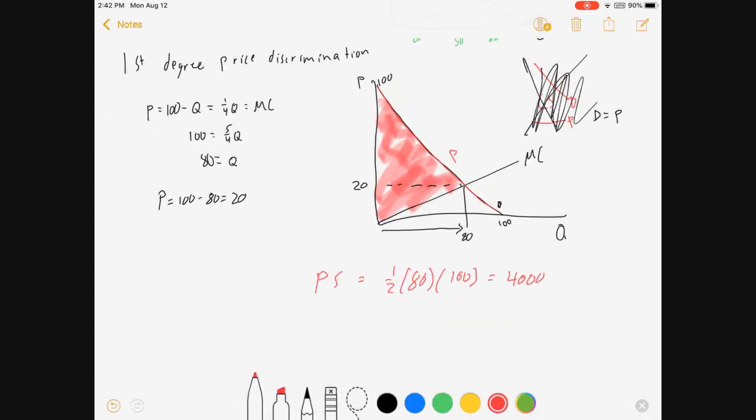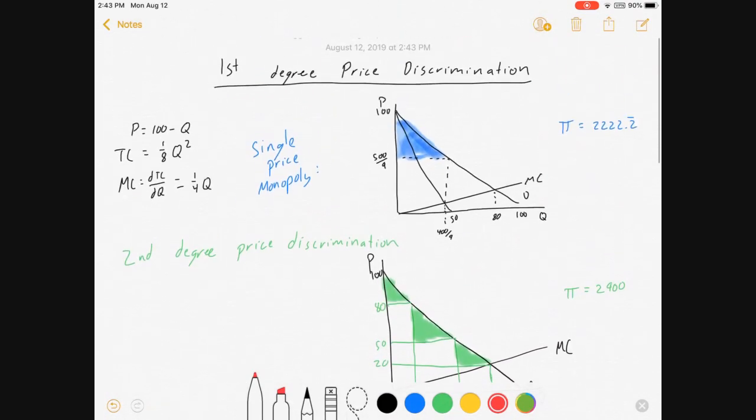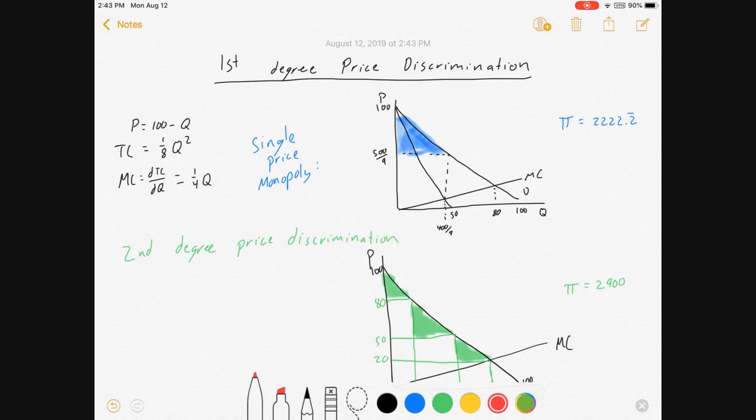Now, I mentioned this is the same thing as profit. Why is this the same thing as profit? Profit equals producer surplus if, and only if, your fixed costs are equal to zero. If you don't have fixed costs, profit is producer surplus, and there are no fixed costs in that equation.